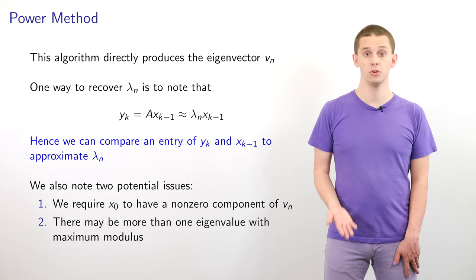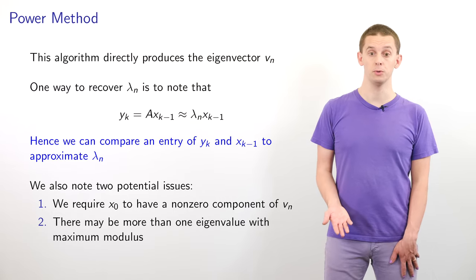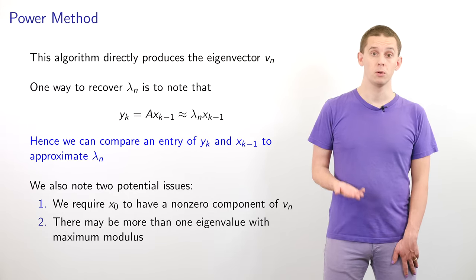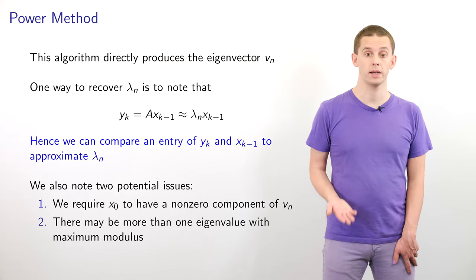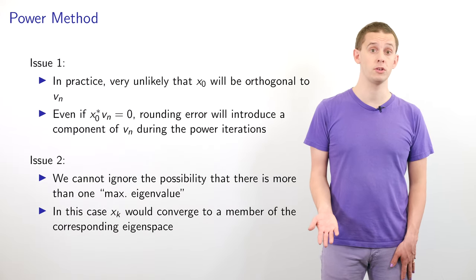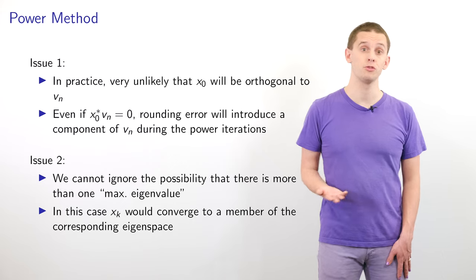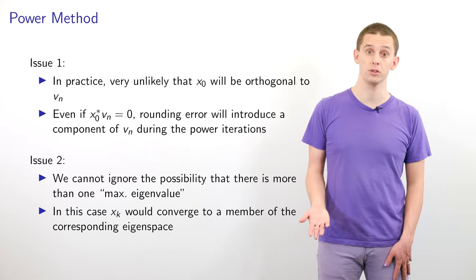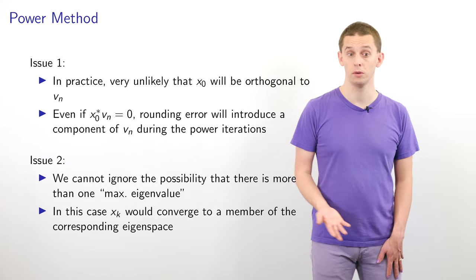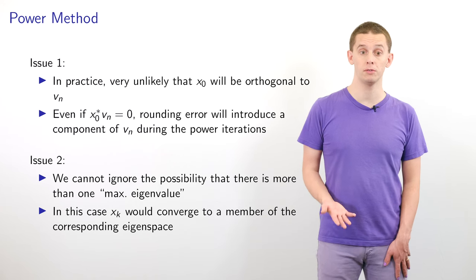There are two small issues we might encounter. We require that our initial vector x0 must have some non-zero component in the direction of v_n, and we could also have more than one eigenvalue with maximum modulus. For the first issue, it's very unlikely that x0 will be orthogonal to v_n, and even if it was, rounding error will still introduce a component in the direction of v_n during the iteration. For the second issue, x_k would converge to a member of the corresponding eigenspace.